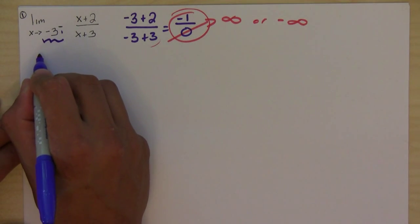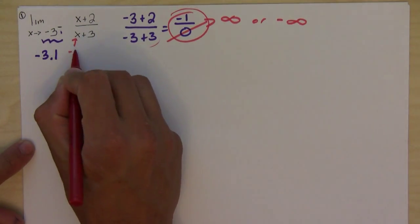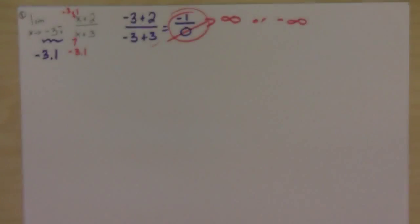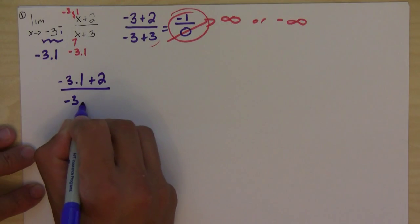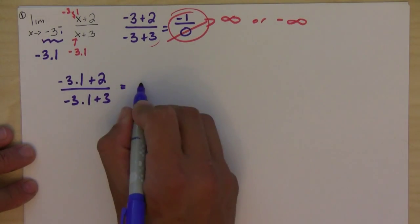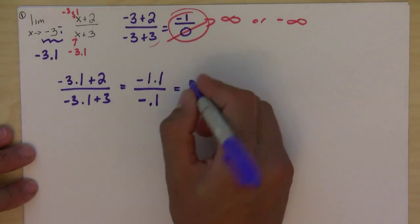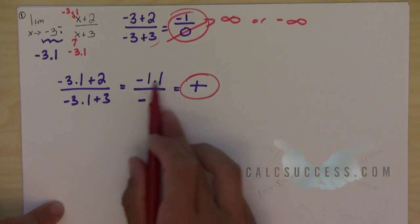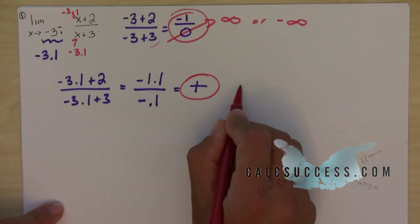I'm going to choose negative 3.1 and plug it into this expression. I would get negative 3.1 plus 2 over negative 3.1 plus 3. What I'm really looking for is the sign. On top I get negative 1.1, on the bottom negative 0.1. Notice the two negatives turn into a positive, so as we approach negative 3 from the left, this is going to positive infinity.